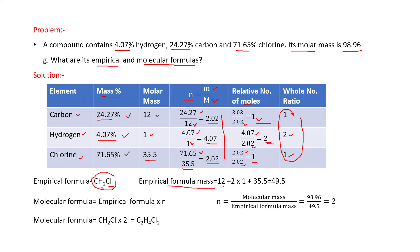From the empirical formula CH₂Cl, we calculate the empirical formula mass: 12 + (2 × 1) + 35.5 = 49.5. The molecular formula is related to the empirical formula by: molecular formula = empirical formula × n, where n = molar mass ÷ empirical formula mass = 98.96 ÷ 49.5 = 2. Multiplying each atom in the empirical formula by 2 gives the molecular formula: C₂H₄Cl₂.